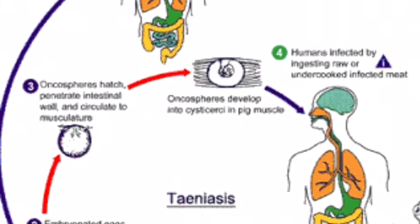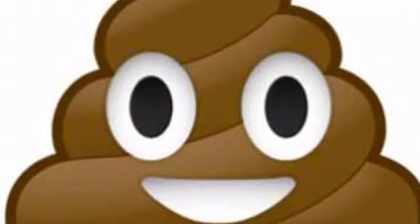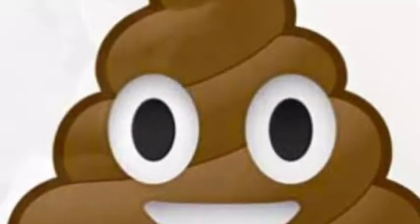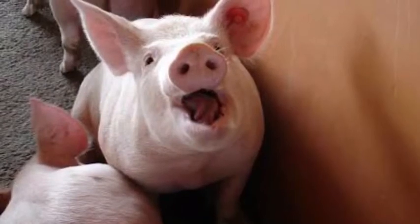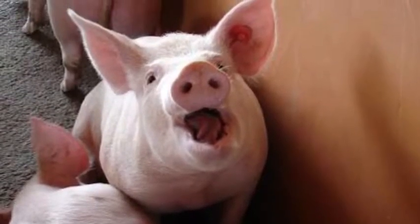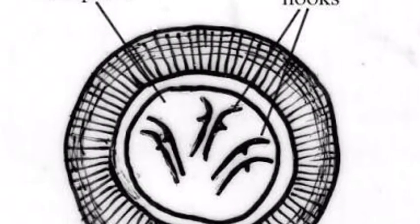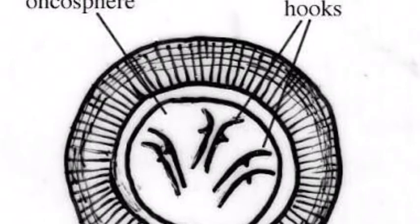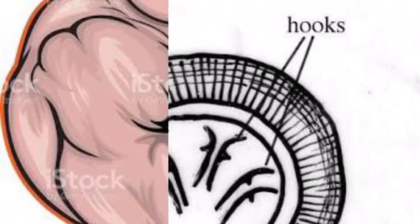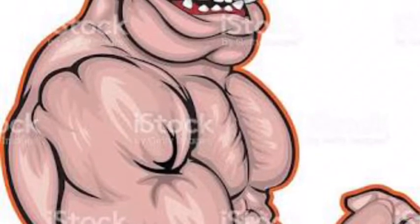So how do they grow? Let's find out. First, eggs or gravid proglottids in feces are passed into the environment. Second, embryonic eggs and gravid proglottids are ingested by pigs. Third, oncospheres hatch and penetrate the intestinal walls and circulate to the musculature in pigs. Fourth, oncospheres develop into cysticerci in the muscles of pigs.